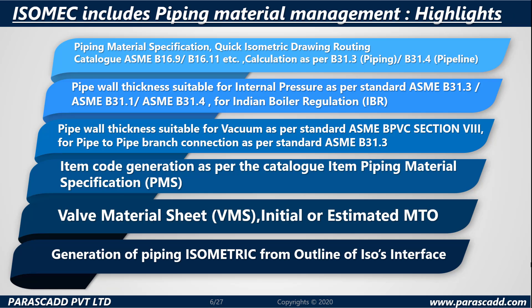ISO-MEC includes Piping Material Management. A few highlights include Piping Material Specification, Quick Isometric Drawing Routing, Catalogue ASME B16.9, B16.11, etc., and calculation as per B31.3 Piping or B31.4 Pipeline.